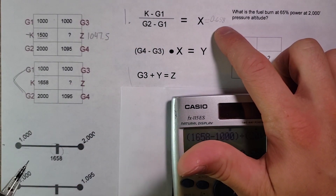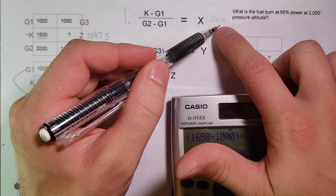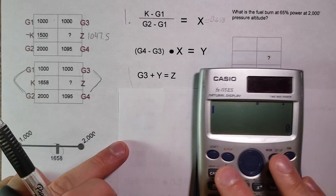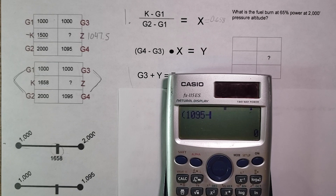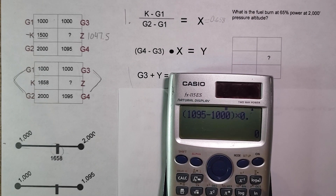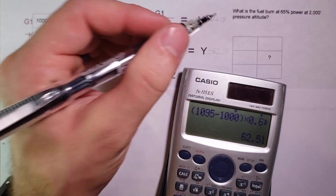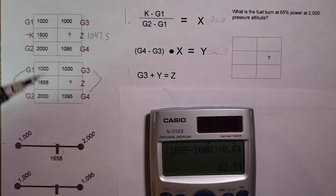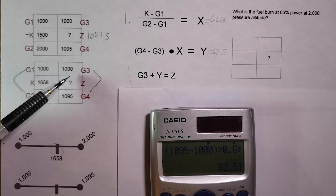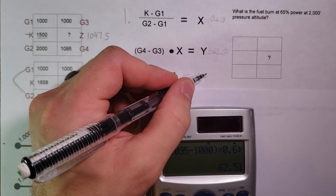Next, we need to find the difference between the two other given numbers and apply that percentage to that difference. On the calculator, we do G4 minus G3: 1,095 minus 1,000, times whatever we got for X — times 0.658. The answer is 62.51. The last step is to add that to 1,000 to get Z, our final answer. Z equals 1,062.51.